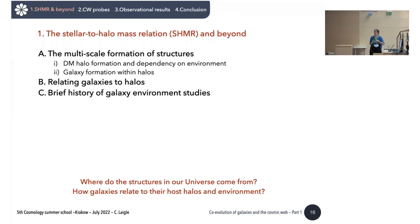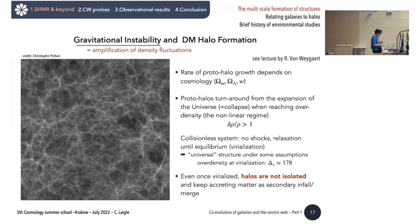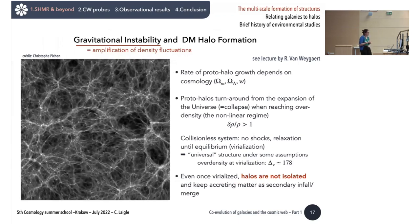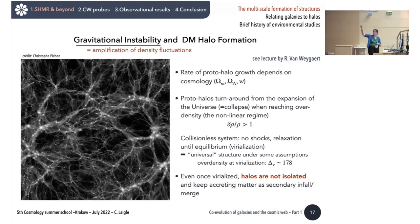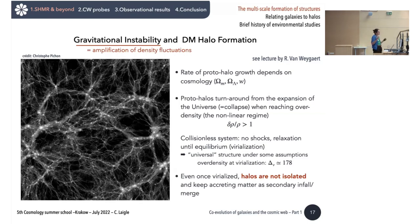The main question we are going to discuss now is: where do structures in our universe come from? You already know this from Rin's talk — this is a brief recap. To understand galaxy formation, we need first to understand halo formation, so we'll look at just dark matter. These dark matter proto-halos grow from initial density fluctuations, and the growth rate is shaped by the cosmology.